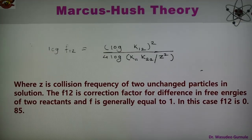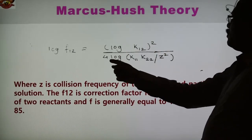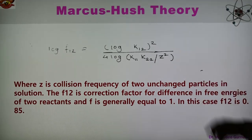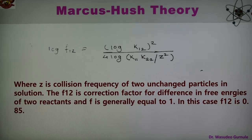For the cross reaction, log F12 equals log K12 squared divided by 4 log(K11·K22), raised to the power of Z squared. In this equation, Z is the collision frequency of two uncharged particles in solution. F12 is a correction factor for the differences in free energy of the two reactants, and is generally equal to 1. For this reaction, F12 is 0.85.